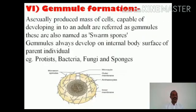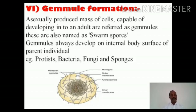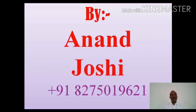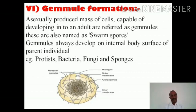The sixth method is gemmule formation. An asexually produced mass of cells — a group of cells capable of developing into an adult — are referred to as gemmules, many times also called swarm spores. Importantly, gemmules develop on the internal body surface of the parent individual, whereas budding occurs on the external surface. Many protists, bacteria and fungi practice gemmule formation. Within the gemmule, there are archaeocytes which convert themselves into potential reproductive cells under favorable conditions and may develop into daughter individuals.